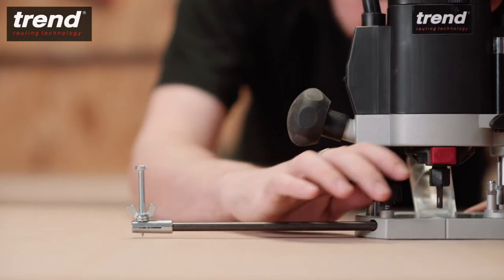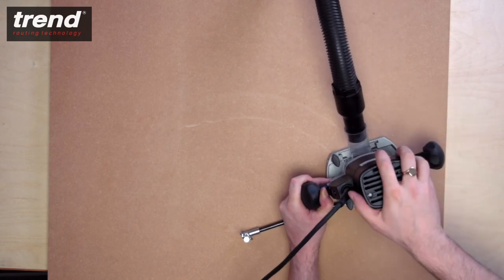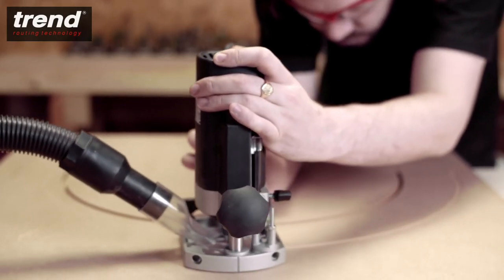A beam trammel attachment is included for use when cutting arcs or circles. Here it is being used to cut a curved template for a mirror.